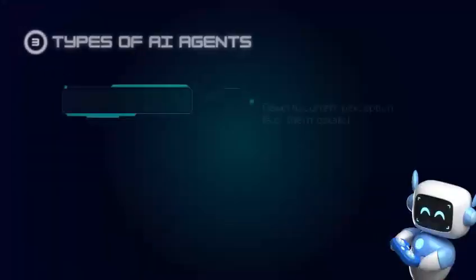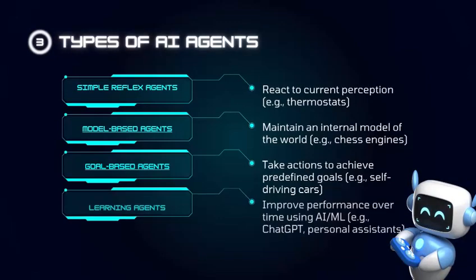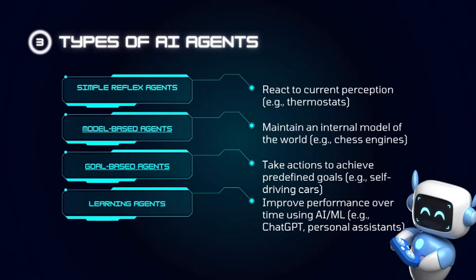Goal-based agents take actions to achieve predefined goals. For example, self-driving cars.